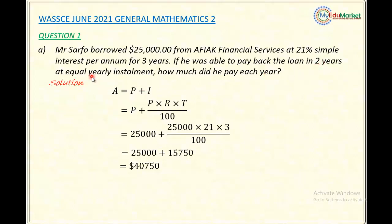So how much did he pay? This is the total amount that he's supposed to pay, and he paid this amount in two equal yearly installments, which means the amount paid each year would now equal this total amount divided by two. So I have $40,750 divided by 2.